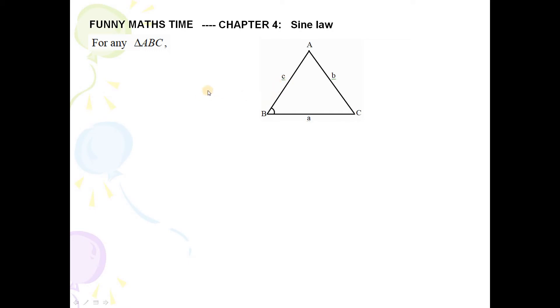And for the Sine Law, we have sin A over a equal to sin B over b equal to sin C over c. And of course, you can reverse for the numerator is sin A, sin B, sin C and the denominator is a, b, c.